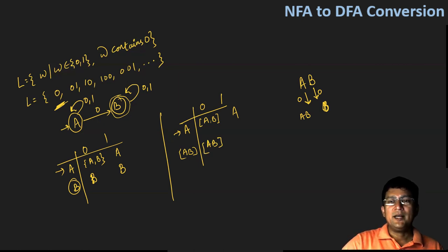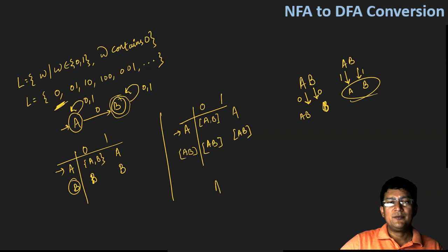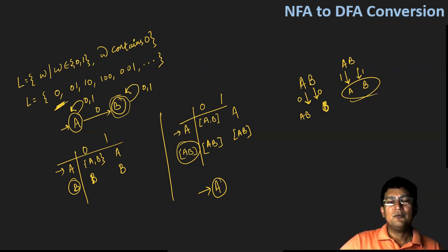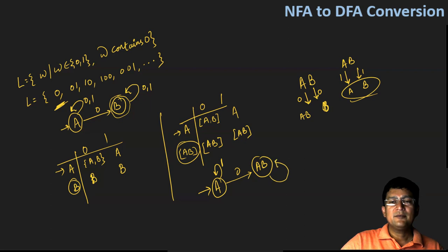Now on AB with symbol one: referring to the NFA table, A on one goes to A and B on one goes to B. Taking the union of these two gives AB. So I draw the DFA automata: A is the start state, AB is the final state — whichever state contains B will be the final state, since B was the final state in the NFA. So any state containing B becomes a final state in the DFA. AB is the final state.